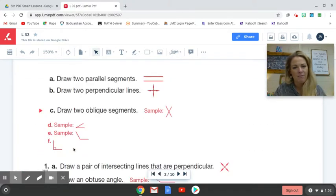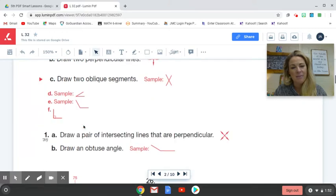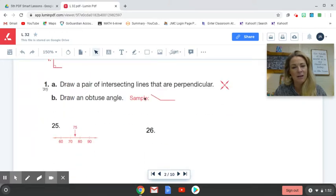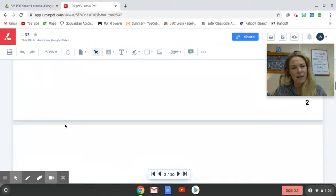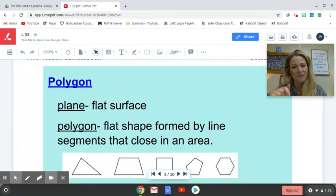I'm gonna skim past this page of notes. This is straight from the book, a review of homework. I will attach these notes in Google Classroom. You can take time to look at them more closely, but this is just reviewing parallel lines, perpendicular lines, oblique segments, intersecting lines that are perpendicular, obtuse angles, definitely stuff you've seen before.